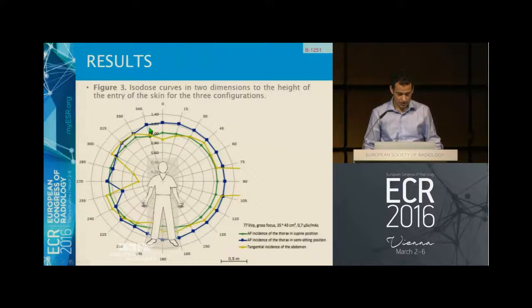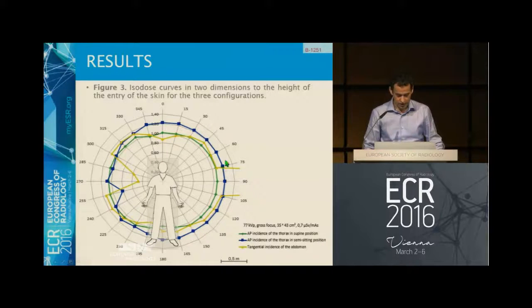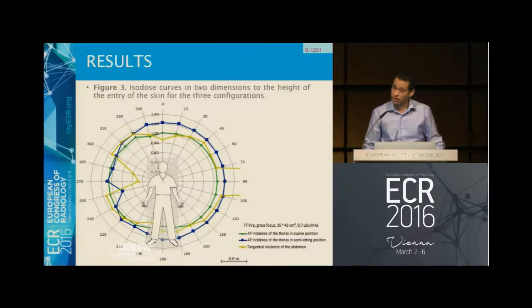As you can see, the blue one shows a little bit more scattered radiation. This has to do with the angle that the chest is in when we perform the exam.